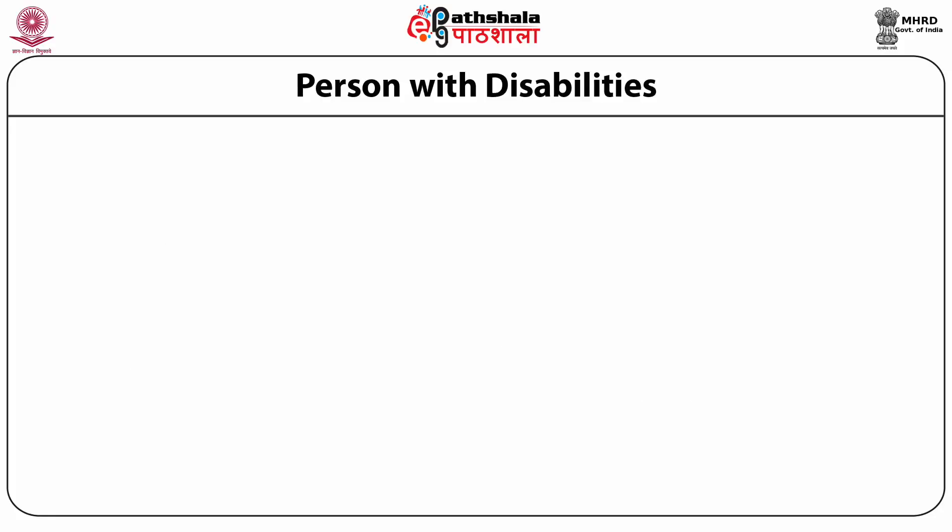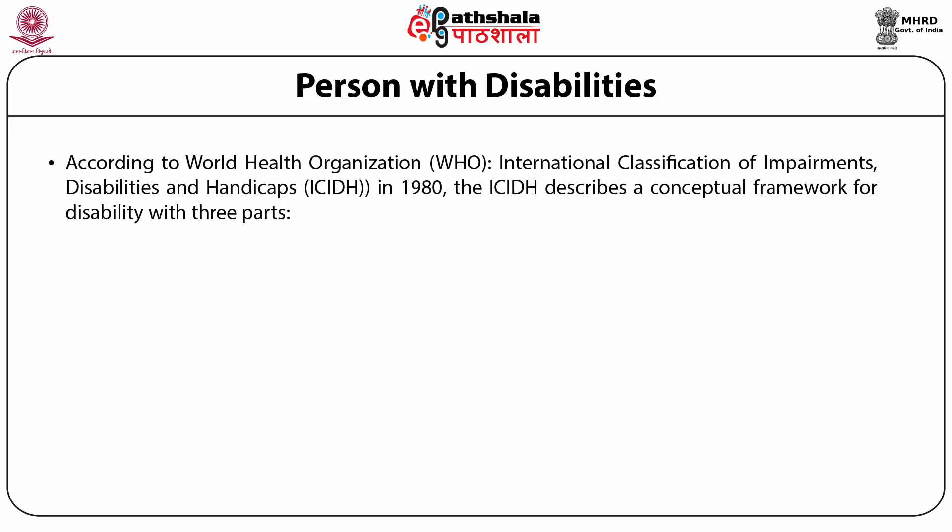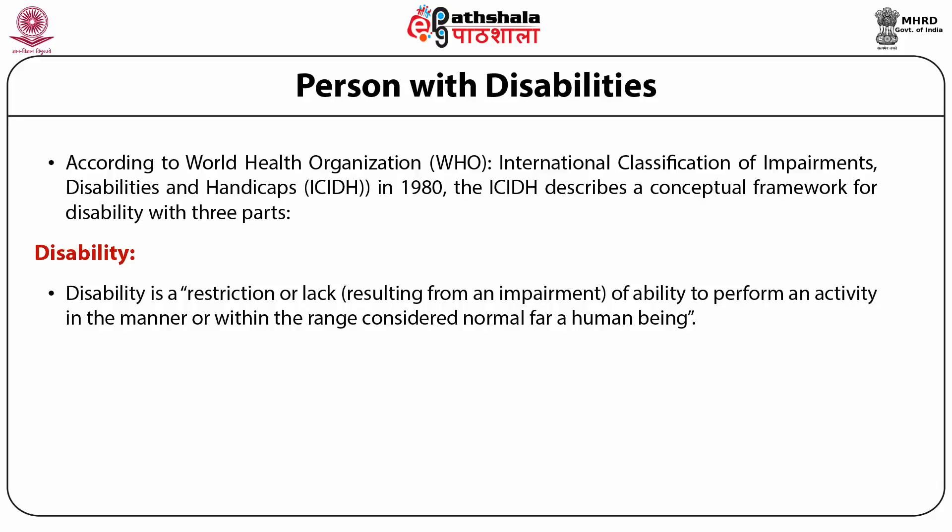Now let us explain what kinds of disability exist. According to the World Health Organization's International Classification of Impairments, Disabilities and Handicaps in 1980, the ICIDH describes a conceptual framework for disability with three parts. First is disability. Disability is a restriction or lack resulting from an impairment of ability to perform an activity in the manner or within the range considered normal for a human being.